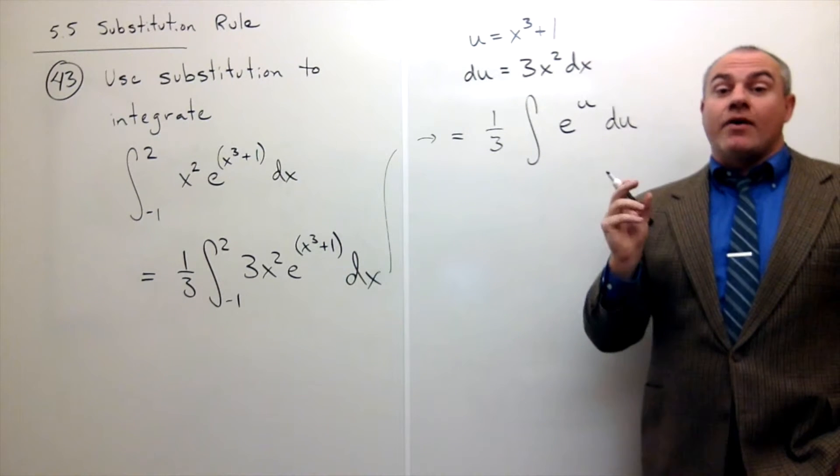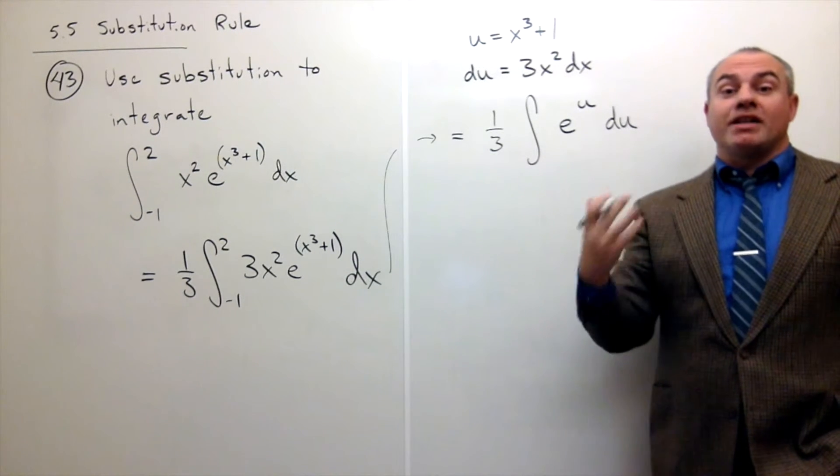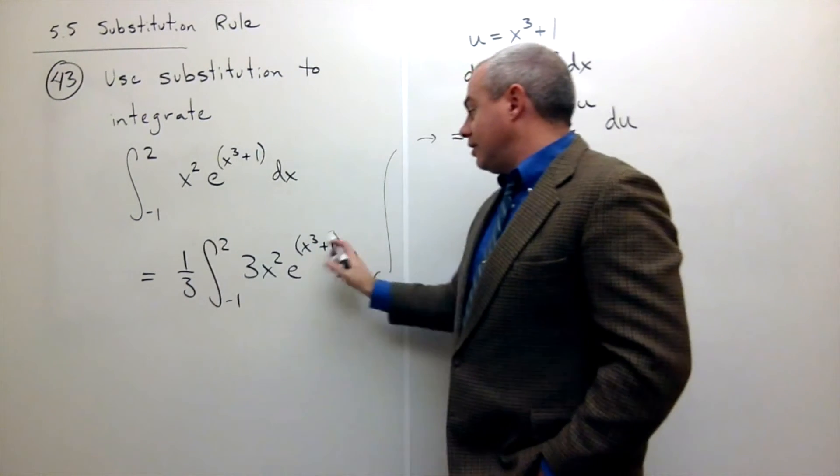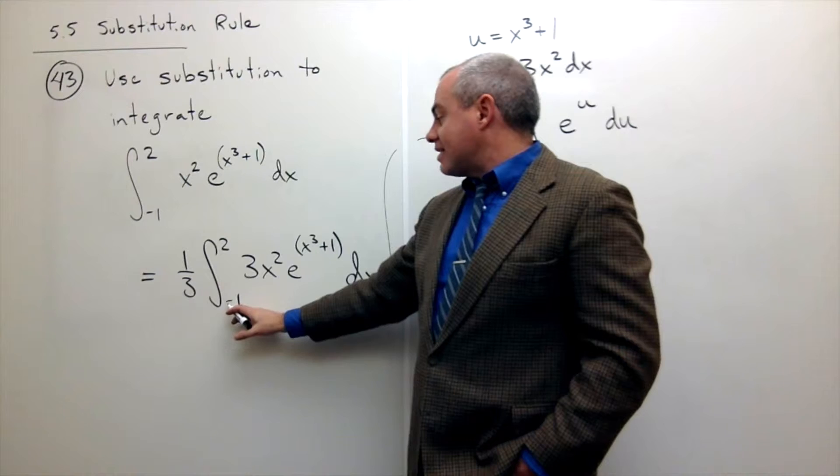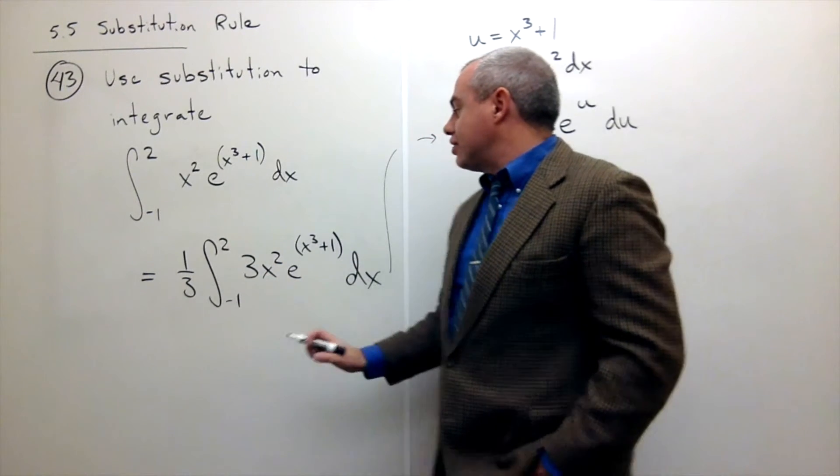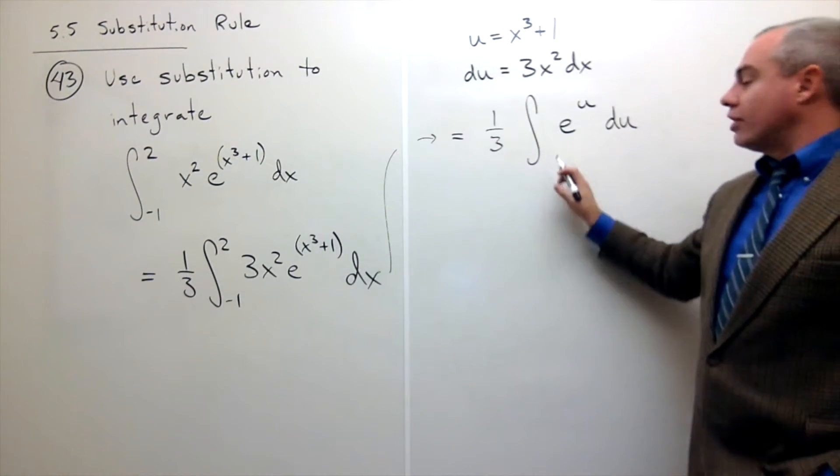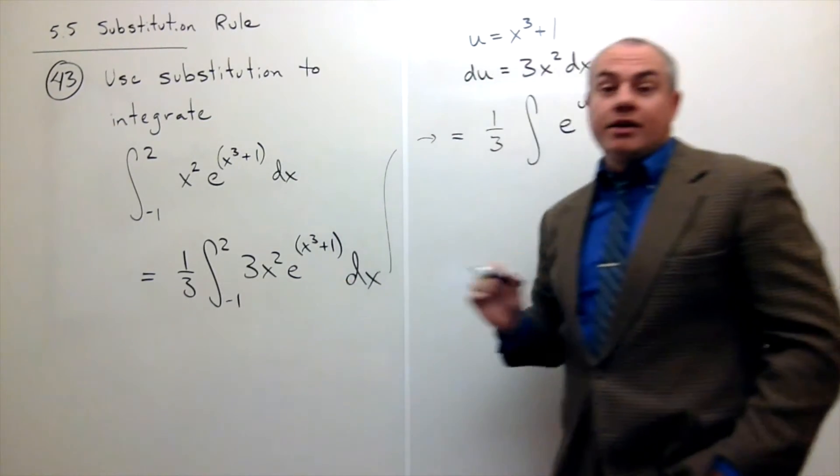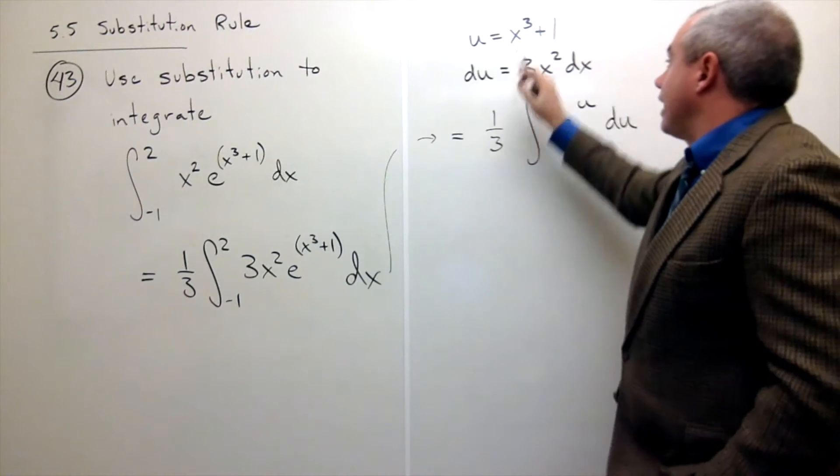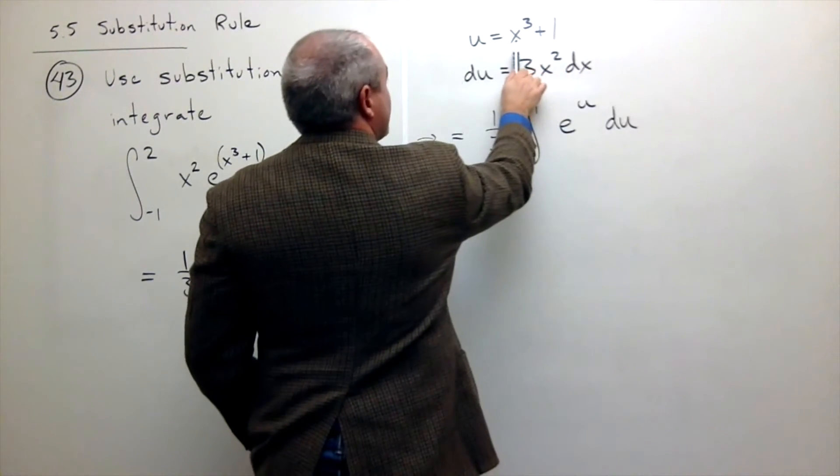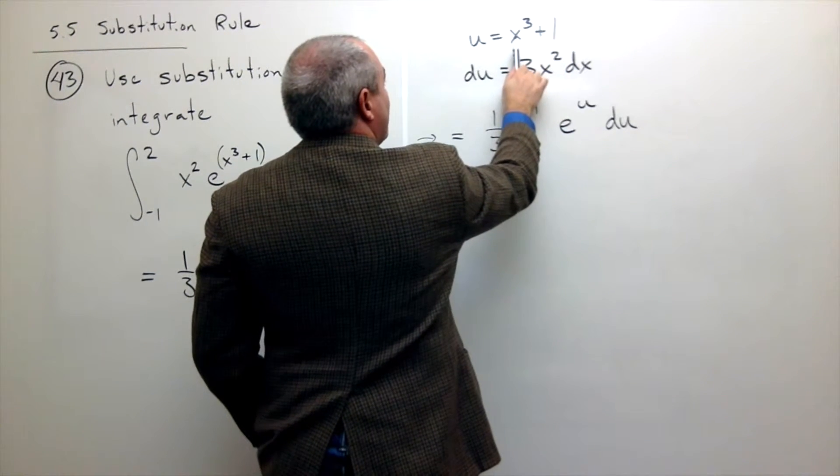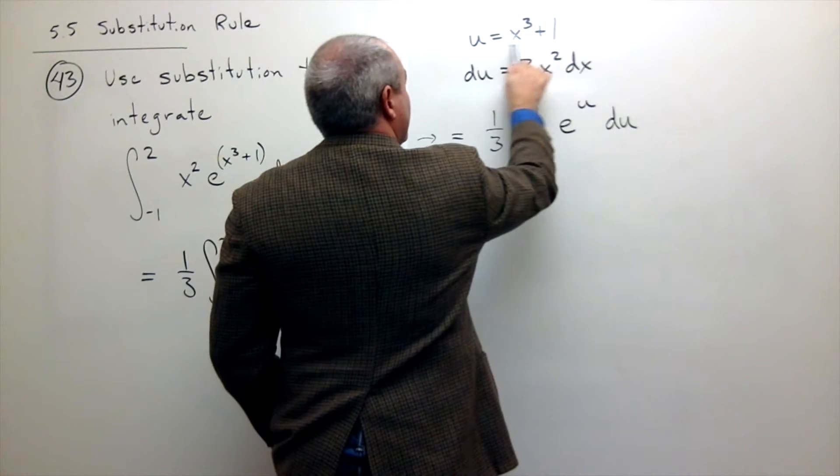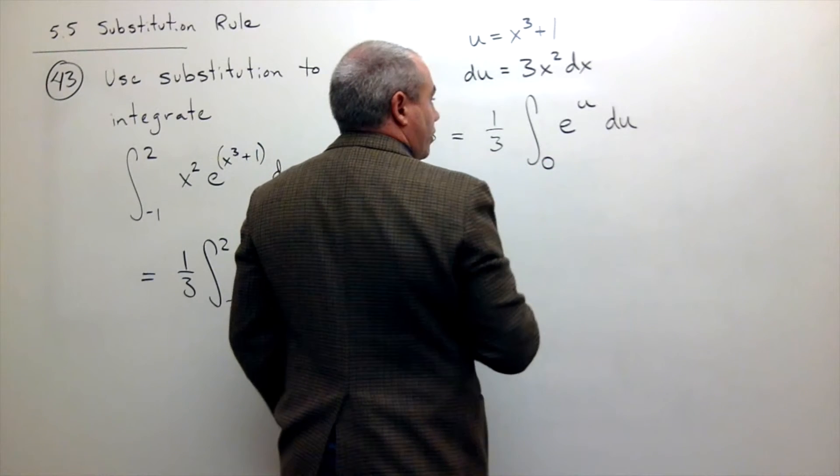I'm almost there. Now I need to change my limits of integration. Right now I'm in x world that lives between x is negative 1 and x is 2. Now I'm in u world. And where do the u's live? Well, if x is minus 1, what is u? I come up here and I say, okay, if x were minus 1, minus 1 cubed is minus 1 plus 1 is 0. So this is a 0.